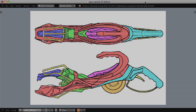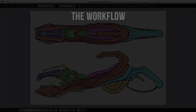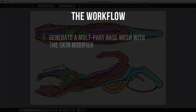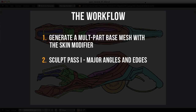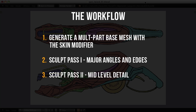Now the last thing I want to do before we jump into Blender is quickly outline the workflow. First, we'll create our base mesh in several pieces with the skin modifier — in my experience this is the quickest and most intuitive way to get a usable proxy mesh to sculpt from. Second, we'll focus on the macro form of the gun, roughing out the major angles and edges. Third, we'll begin to refine the detail to a mid-range level. And finally, we'll add fine detail like construction lines, potholes and bolts, crisp edges, and other polish to finish off the sculpt.